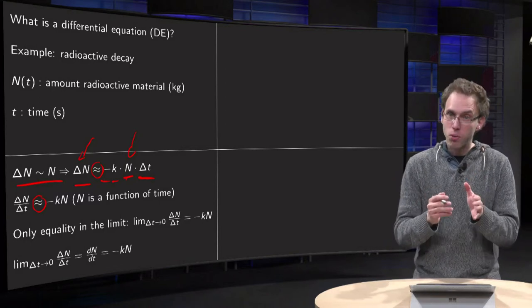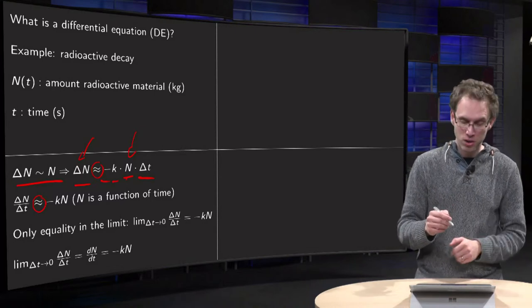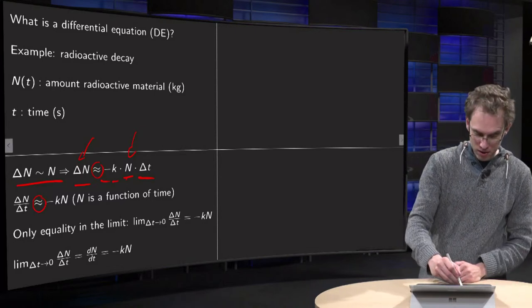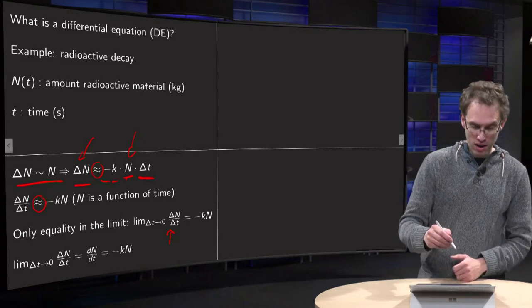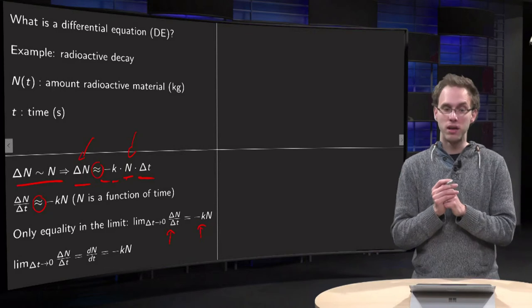And it only becomes an equality when you take your time interval to zero. So if you take delta t to zero, you have to take the limit delta t to zero of delta N over delta t. Right hand side is no problem, of course. It just takes minus kN.